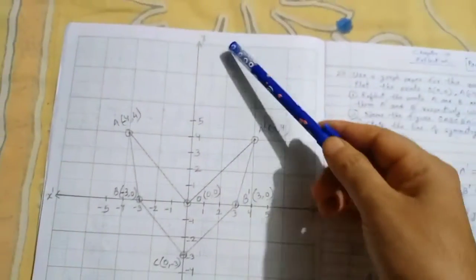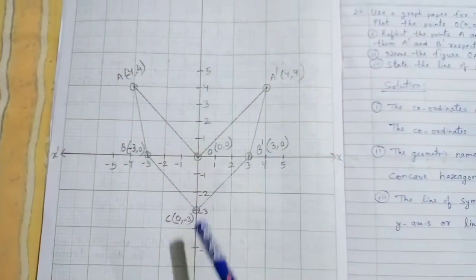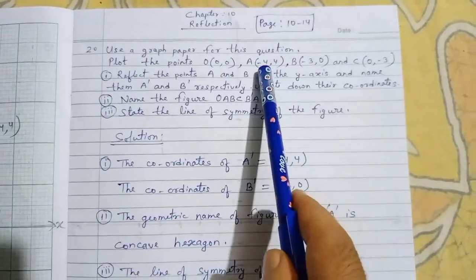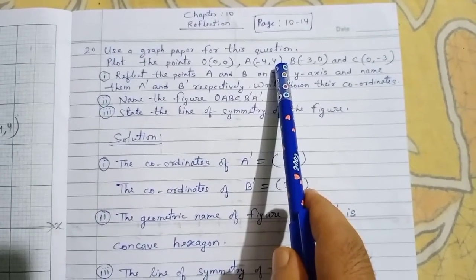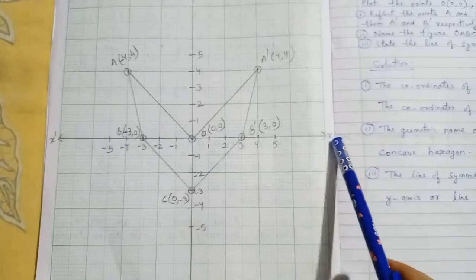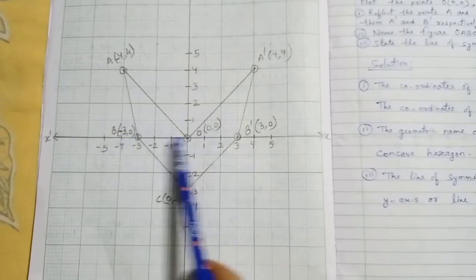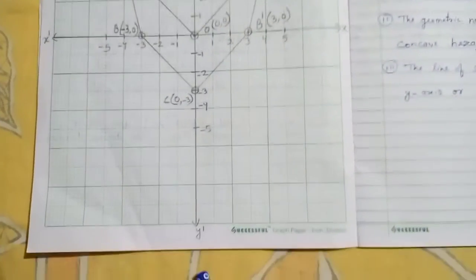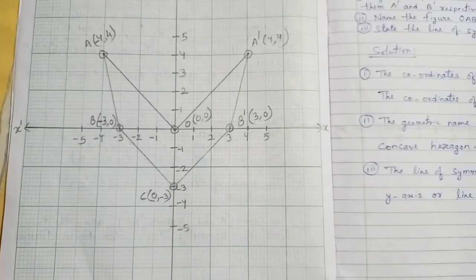To set up the graph, draw the x-axis and y-axis. The highest value among the four coordinates is 4, so I decided to take 5 for all sides. The y-axis and x-axis are labeled: positive part 1,2,3,4,5 and negative part -1,-2,-3,-4,-5 for both axes.